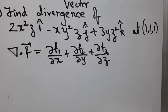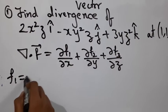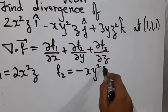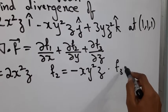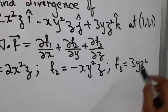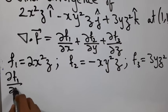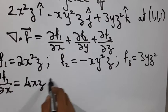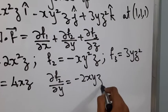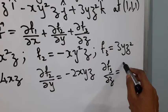We have dou f1 by dou x plus dou f2 by dou y plus dou f3 by dou z. Here f1 is 2x squared z, f2 is minus x y squared z, and f3 is 3y z squared. So dou f1 by dou x is 4xz, dou f2 by dou y is minus 2xyz, and dou f3 by dou z is 6yz.